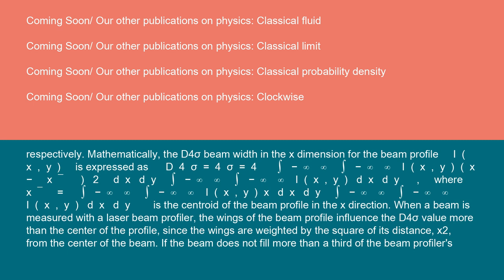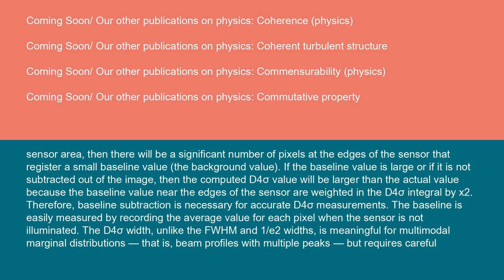When a beam is measured with a laser beam profiler, the wings of the beam profile influence the D4 sigma value more than the center of the profile, since the wings are weighted by the square of its distance, x², from the center of the beam. If the beam does not fill more than a third of the beam profiler's sensor area, then there will be a significant number of pixels at the edges of the sensor that register a small baseline value, the background value. If the baseline value is large or if it is not subtracted out of the image, then the computed D4 sigma value will be larger than the actual value because the baseline value near the edges of the sensor are weighted in the D4 sigma integral by x².